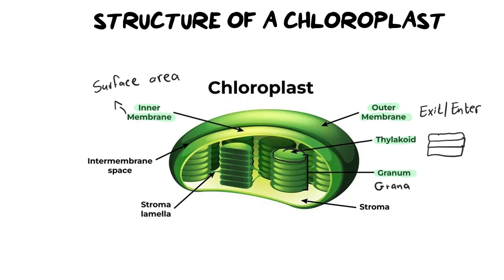Why are thylakoids the star of the show? They are the ones that contain the chlorophyll, and they are where major steps towards creating glucose and sugar take place. That's where the magic happens — inside the thylakoids.